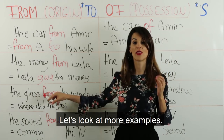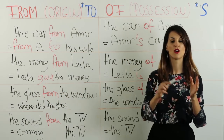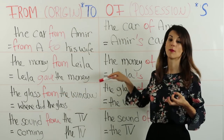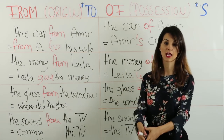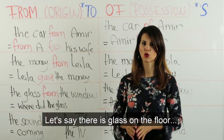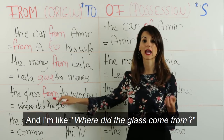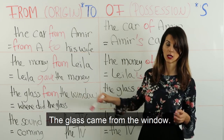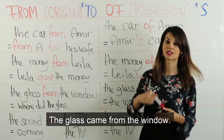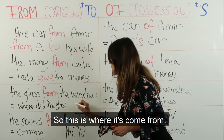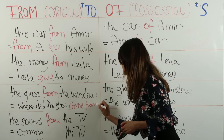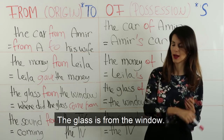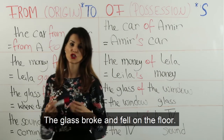Let's look at more examples. 'The glass from the window.' لأزاز زجاج من الشباك، من النافذة. Let's say there is glass on the floor — where did the glass come from? The glass came from the window. مثلاً لنقول في أزاز عالأرض — من أين أتى الأزاز؟ أتى من الشباك. هيدا مصدره. So this is where it's come from. With 'of', the meaning changes. مع كلمة 'of' المعنى بيختلف.